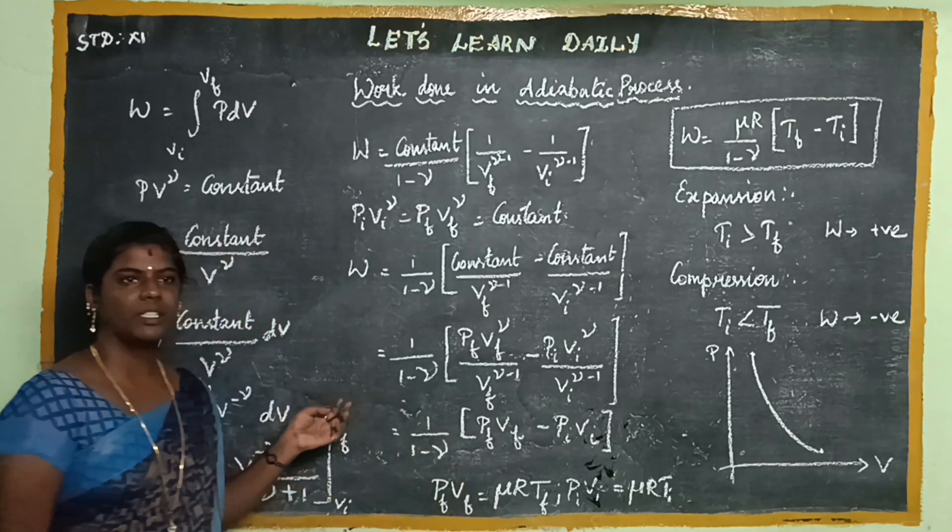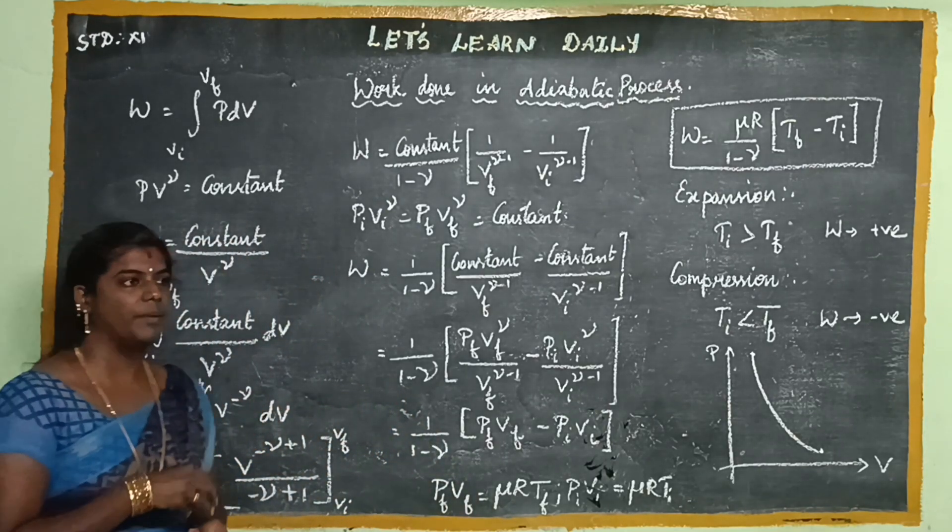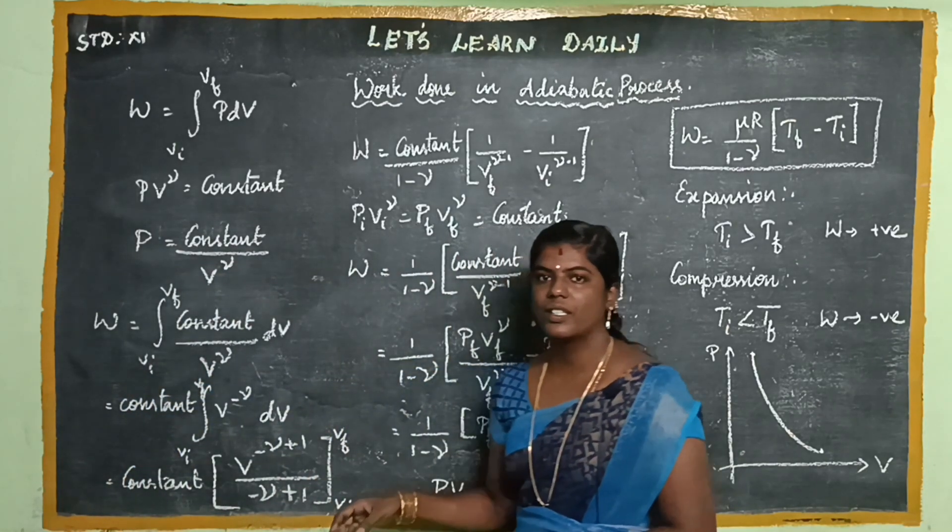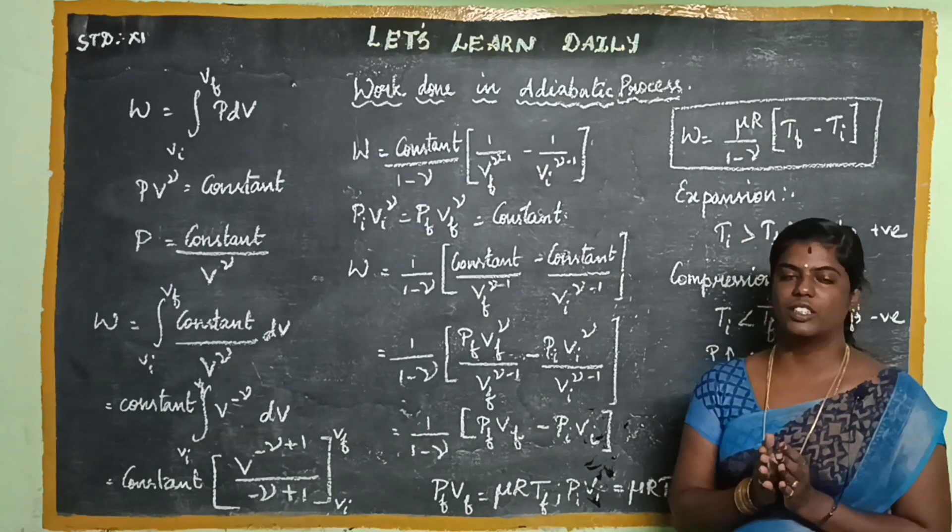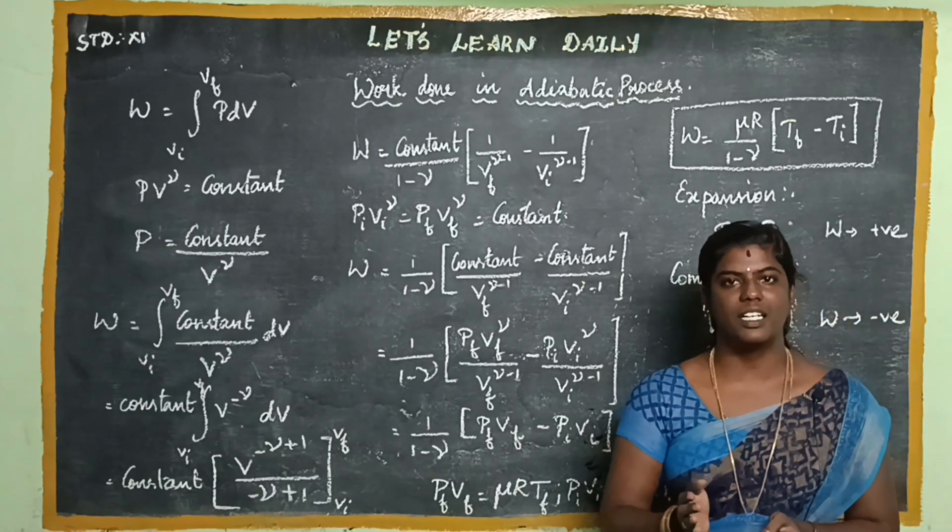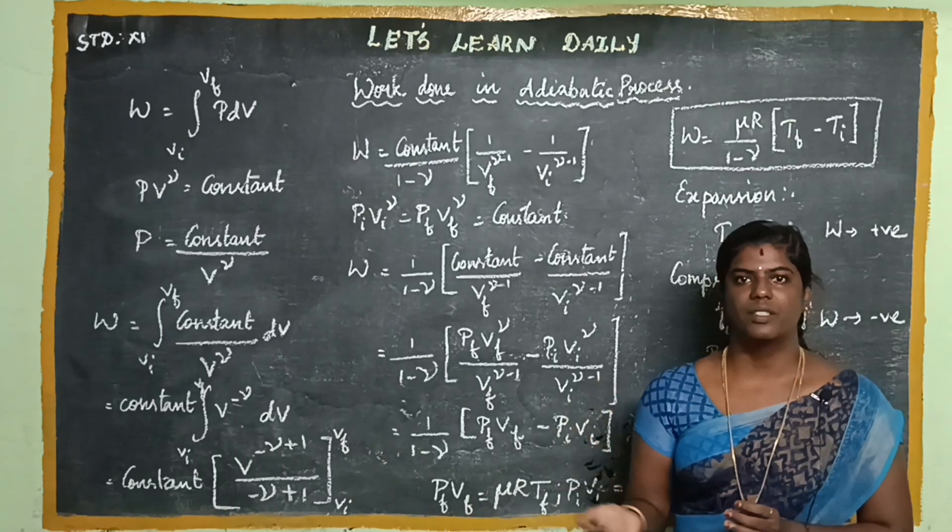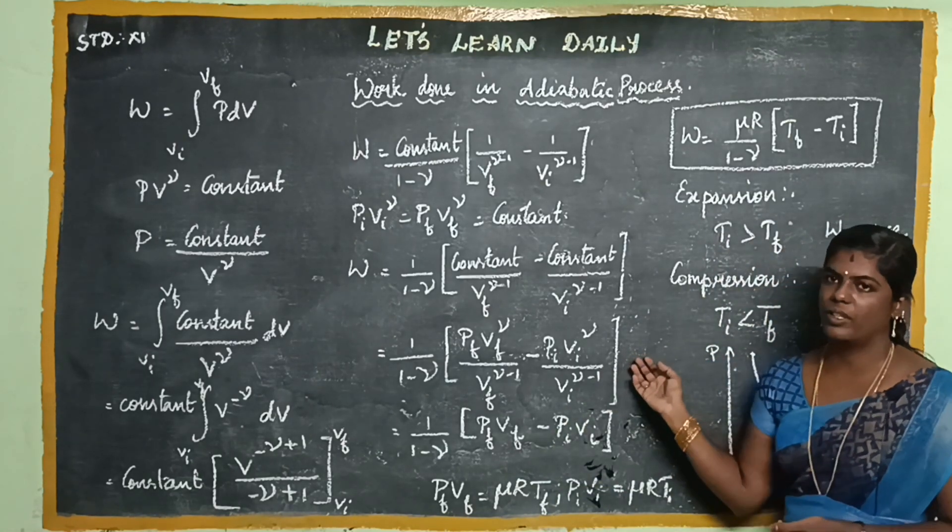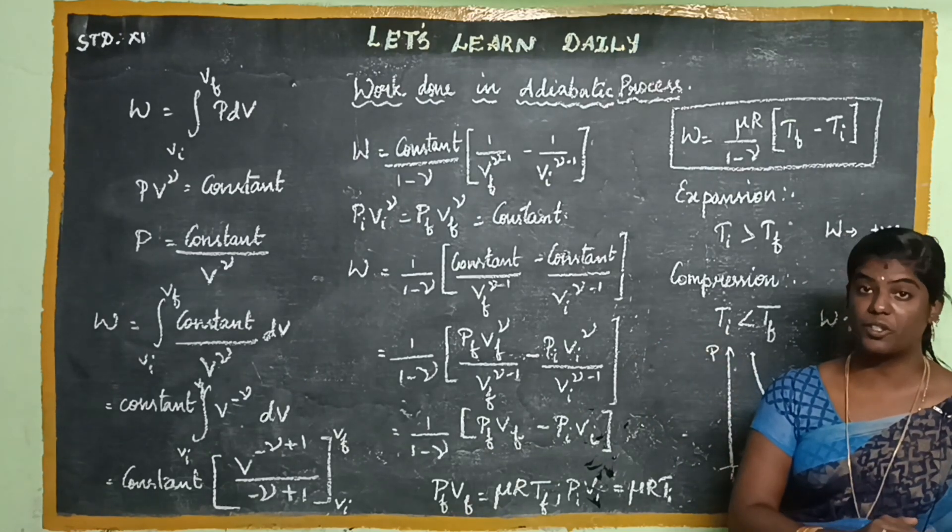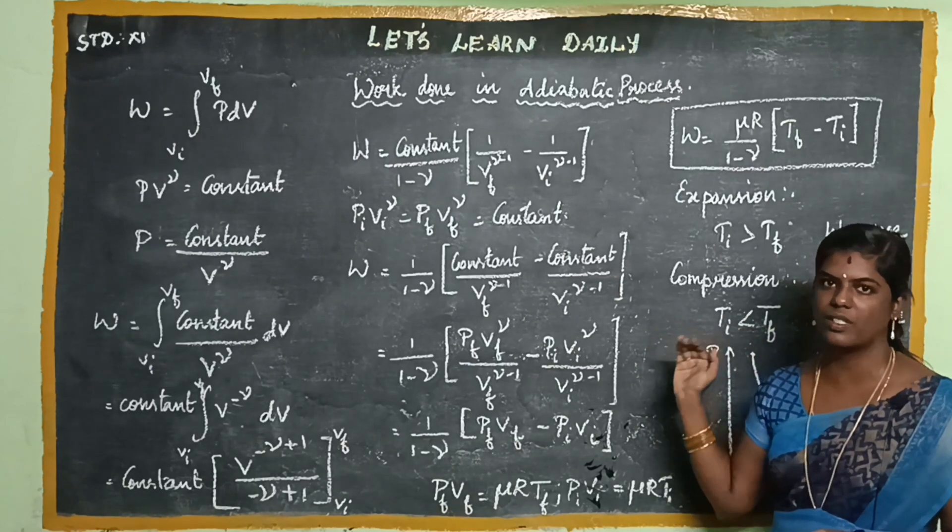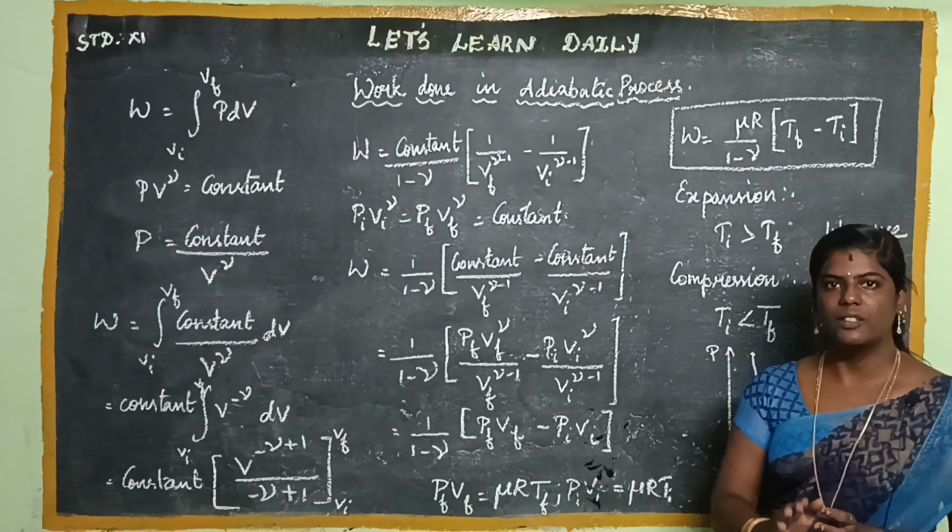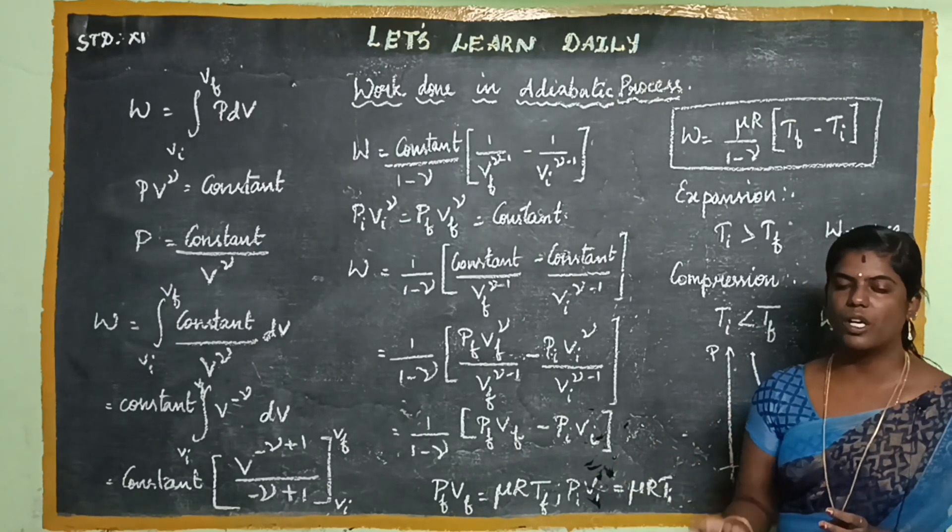So here I am discussing work done in an adiabatic process. In an adiabatic process, there is no heat transfer inside and outside the system. But pressure and volume change. If we look at the isothermal process, temperature is constant. So here heat energy can transition in or out, but only pressure and volume change.